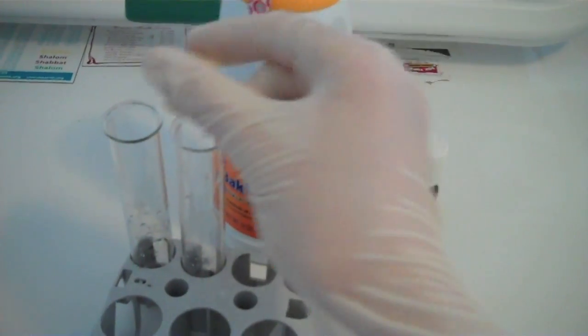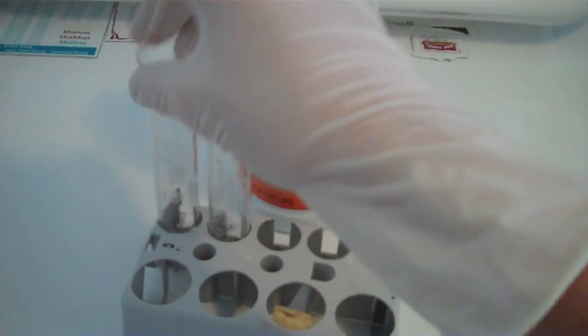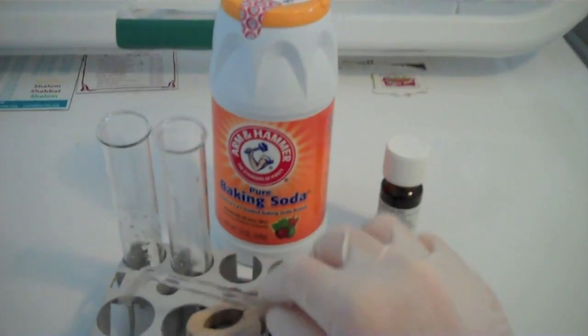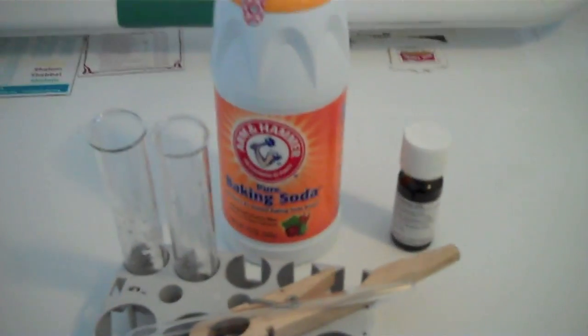A cork with a hole in it to fit the test tube, or it could be a rubber stopper with a hole in it, a test tube clamp, and a glass angle tube.